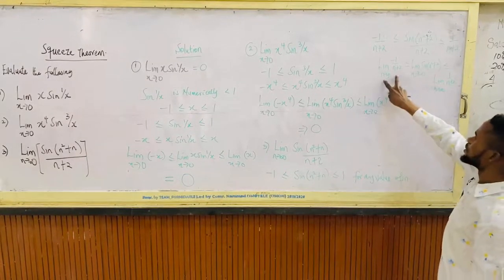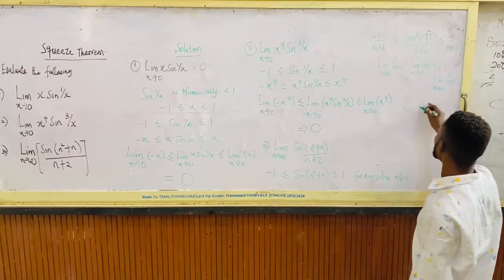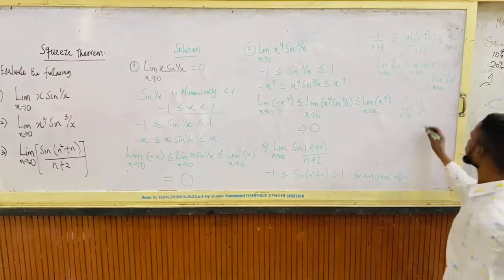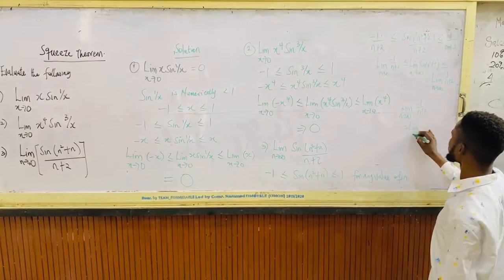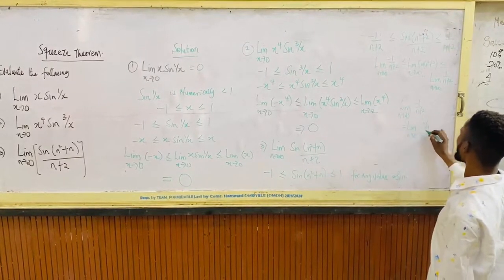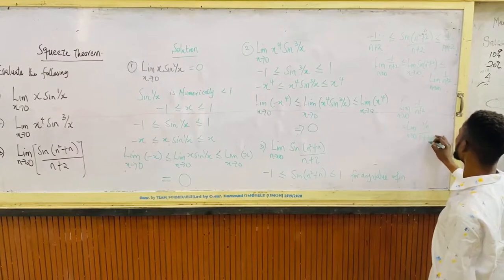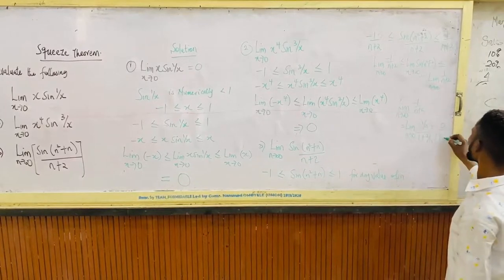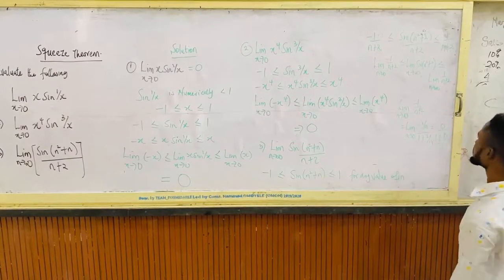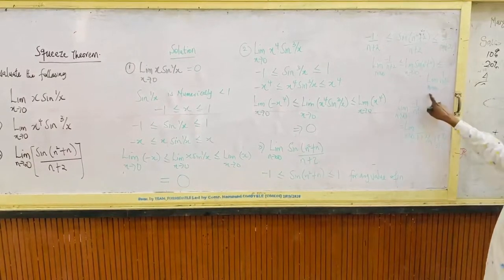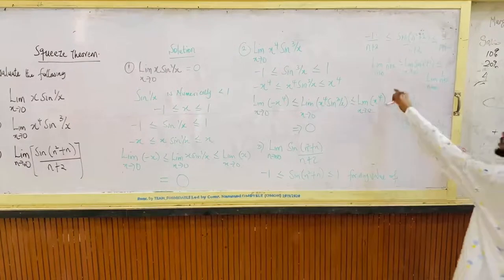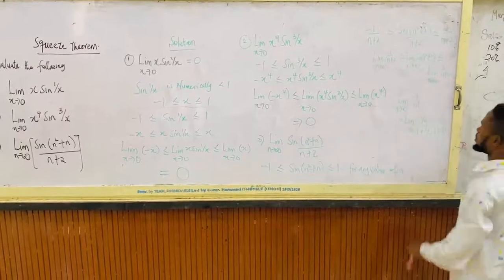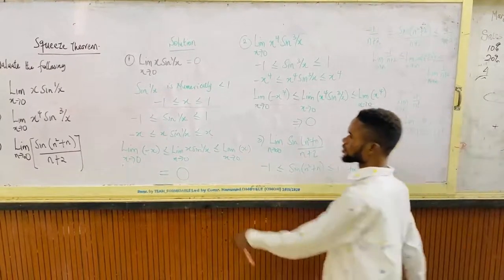Now what is the limit of minus 1 over (n + 2) at which n tends to infinity? When we divide all by n, that will be minus 1 over n, over 1 plus 2 over n. That's minus 1 over infinity, that's 0 over 1 plus 2 over infinity, which is 0. The answer is 0. Similarly, the limit of 1 over (n + 2) at which n tends to infinity is also 0. So the limit of 0 is less than or equal to the limit of this function, less than or equal to 0. That implies that the limit of this function is 0.